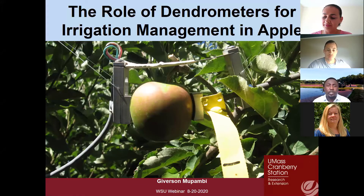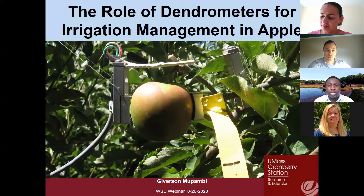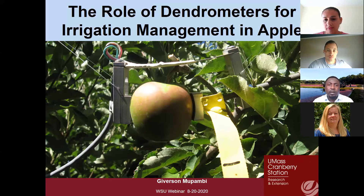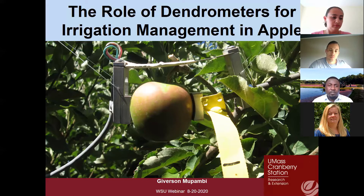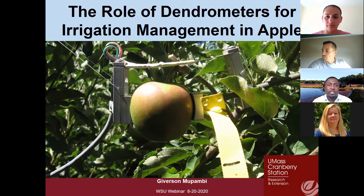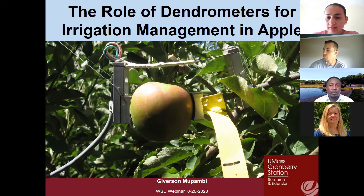Good afternoon, everyone. Thank you for attending this webinar. I think we all agree that irrigation management is becoming really important in apple production. We are all faced with really high water deficit conditions because of high temperatures, and sometimes faced with water restrictions. Finding ways of managing irrigation in a way that's responsive to the tree is a role that can be done with the use of dendrometers. Ten minutes is not enough time to cover everything dendrometers do, but I'm hoping to hit all the high points so that we can start a discussion on how we can use this instrument for irrigation management in apple production.